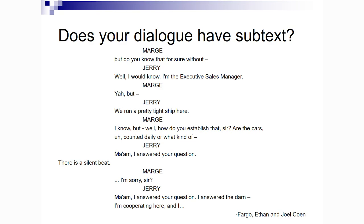Does your dialogue have subtext? How many people saw Fargo? Do you remember the scene where Marge is cross-examining Jerry at the car dealership? Marge is investigating and has no idea that Jerry is behind it, and she's asking him these questions and he's getting increasingly upset. At the end he answers, 'Ma'am, I answered your question. I answered the darn question. I'm cooperating here.' And he runs off. The audience knows that Jerry has done some bad things and he's basically hiding this from Marge, while Marge is on a totally different line of questioning. That's a really good example of subtext.